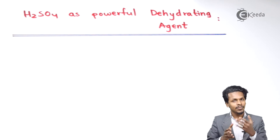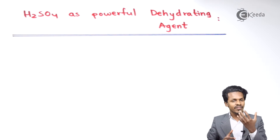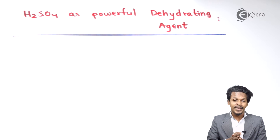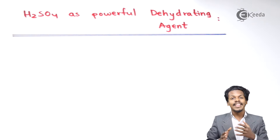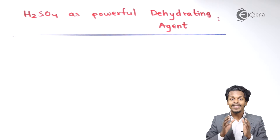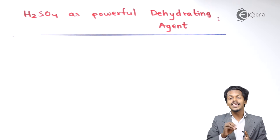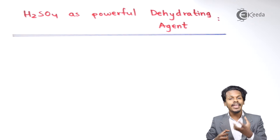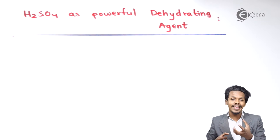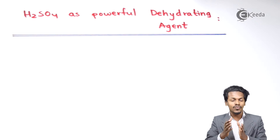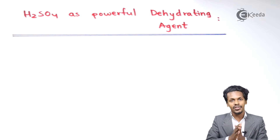Gases like Cl2 and CO2 (carbon dioxide) are not very reactive to sulfuric acid. That is the reason H2SO4 is a very good agent to remove moisture and to convert those wet gases into dry gases. This is how H2SO4 has wide application in drying wet gases.